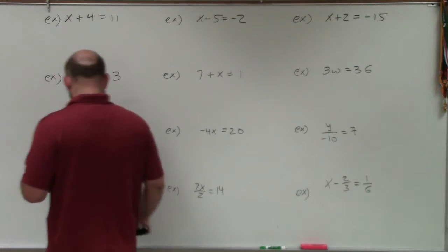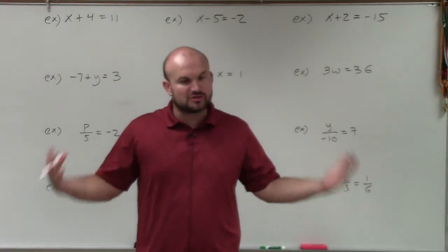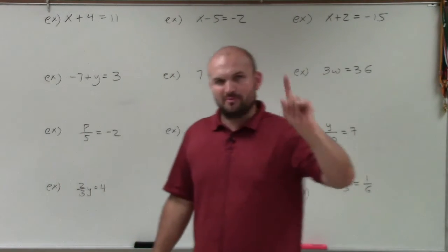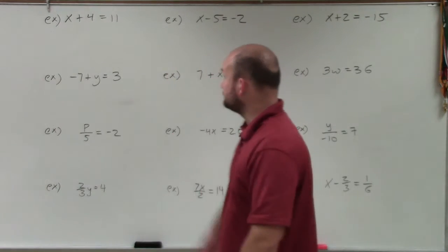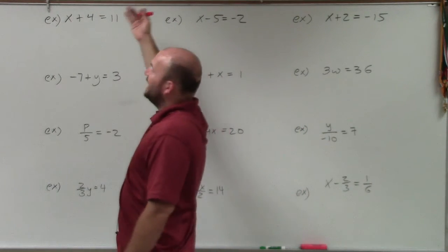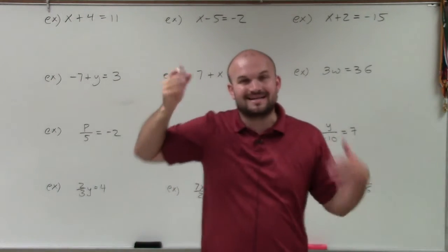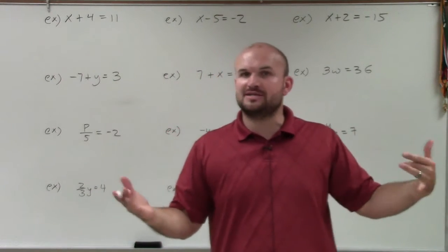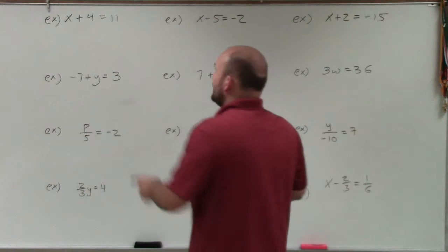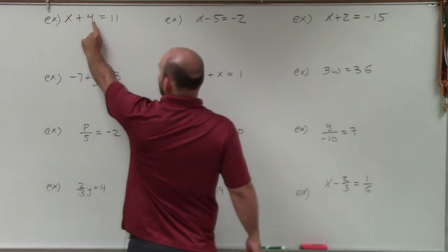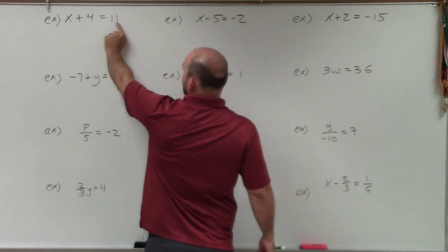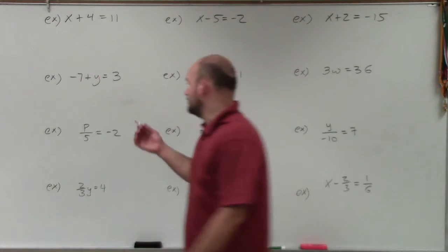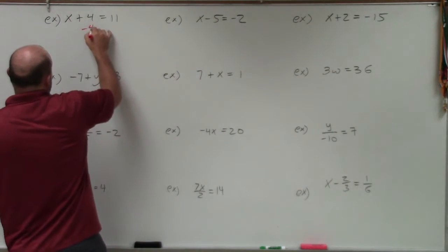The main important thing is you want to identify your variable. For one-variable equations it becomes pretty simple because there's only one variable to solve for. In this first example I have x plus 4 equals 11. So if I want to solve for x, I need to see what operation is being applied to it. I can see x is being added by 4, so to get x by itself, I need to undo adding 4 — I'm going to subtract 4.